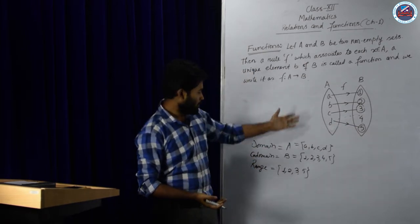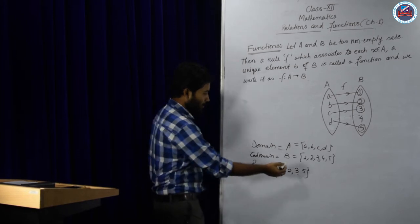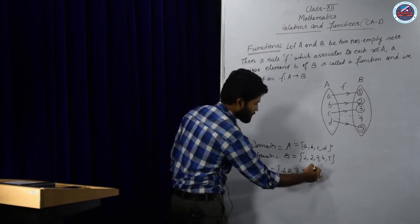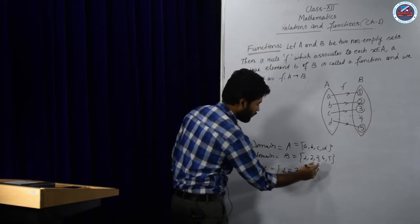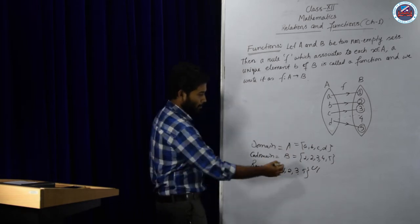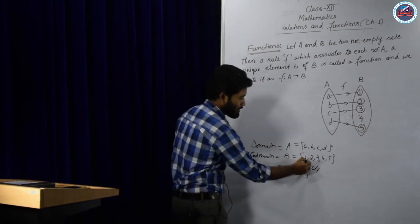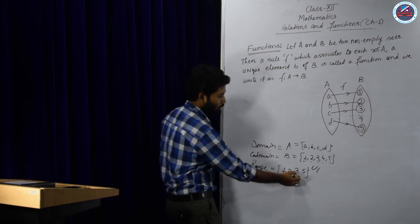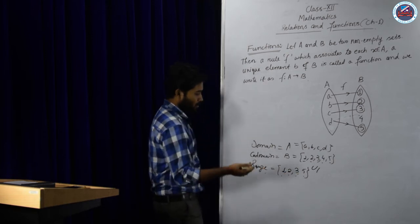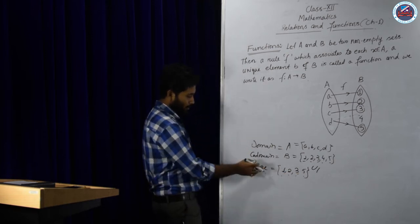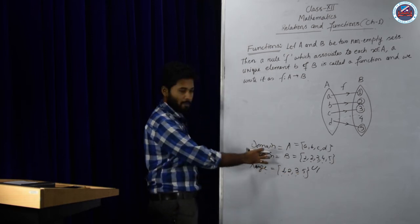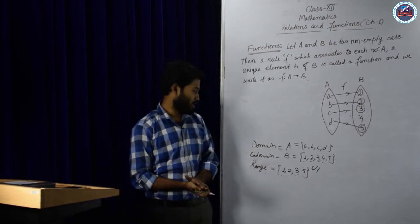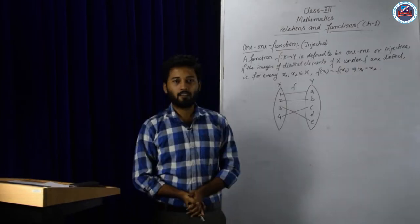From this we can see that the range is always a subset of the co-domain. That means here the co-domain elements are 1, 2, 3, 4, 5 and the range elements are 1, 2, 3, 5. So always we shall see that range is a subset of co-domain. Also, in some cases, we shall see that range is equal to co-domain.